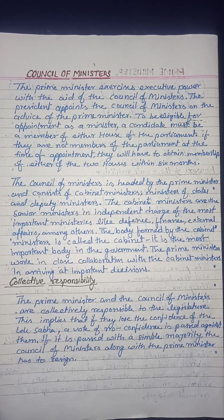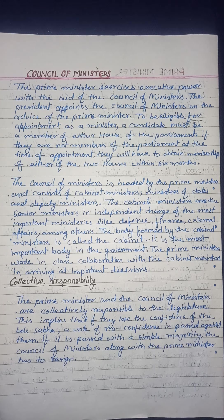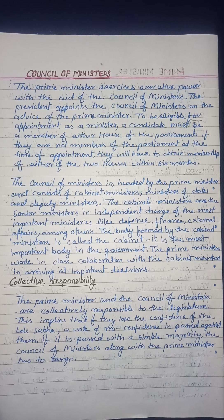The president appoints the council of ministers and the prime minister. If someone wants to become a member of the council of ministers, they must be a member of at least one house of parliament. If they are not a member of parliament at the time of appointment, they must obtain membership within six months.